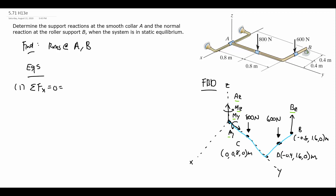In the X direction: there is no AX, the applied forces act in Z, and there's no force at B in X either. Nowhere in this problem do we have a force acting in the X direction, so the right-hand side is also zero. We get zero equals zero, which is true, but this equation doesn't add any information to the problem.